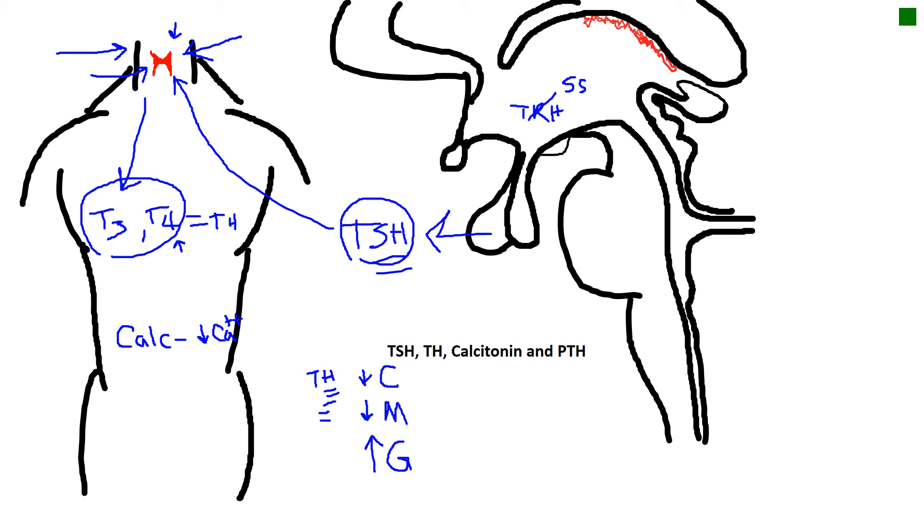There are parathyroid glands on the backside of the thyroid that have chief cells that secrete parathyroid hormone, which increases blood calcium. This is done in three different ways.